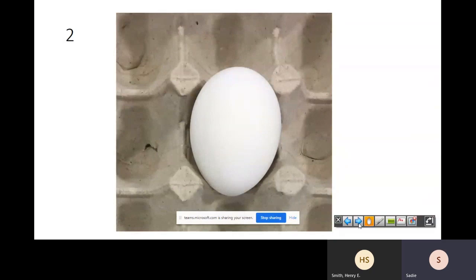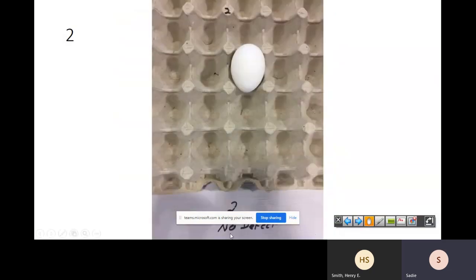When you look at this egg here, I'm pretty certain this one is going to be no defect. I'm not seeing anything unless there's something on the sides, which makes it really difficult from the pictures because it's a lot easier to see these in person than the pictures. But number two is no defect, not seeing anything.